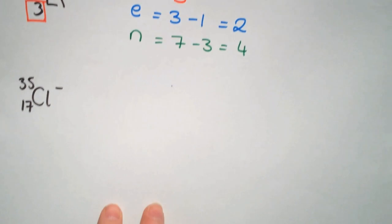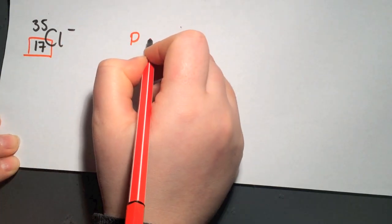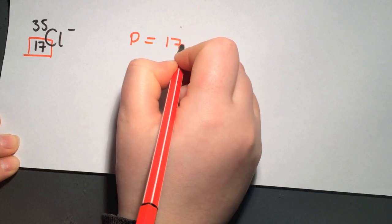Looking now at a negative ion. We have a negative sign here. So protons, the number in the bottom left there. Protons equals 17.